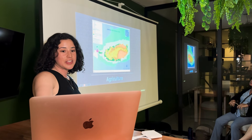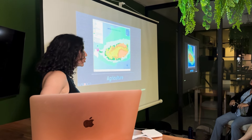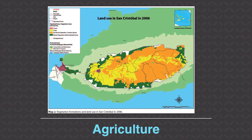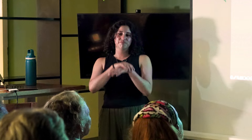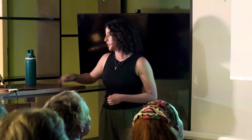The next major cause is agriculture. The Galapagos has port cities and agricultural zones with many farms. When farms were brought, so were non-native vegetation, plants, and animals. In San Cristóbal, the agricultural area shows crops alongside non-native invasive plants that were introduced, and they are spreading rapidly.